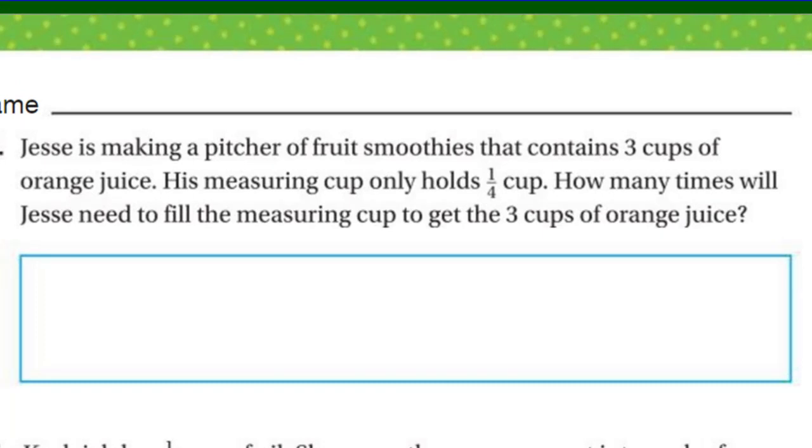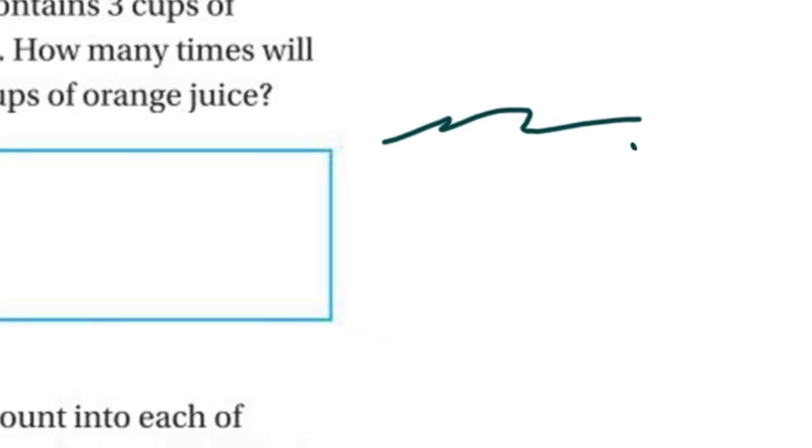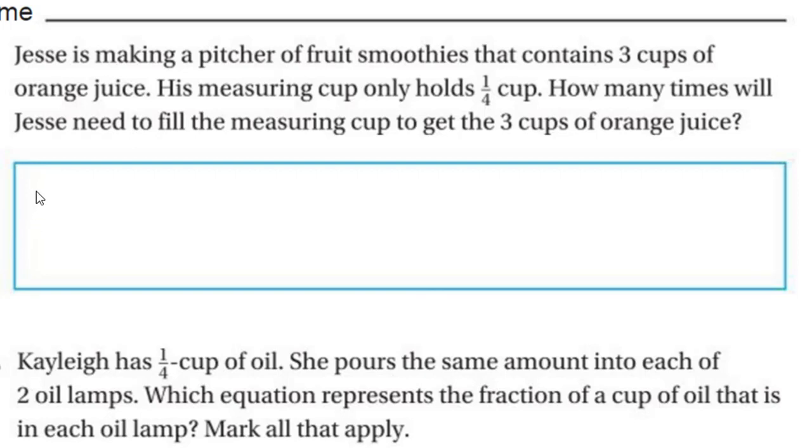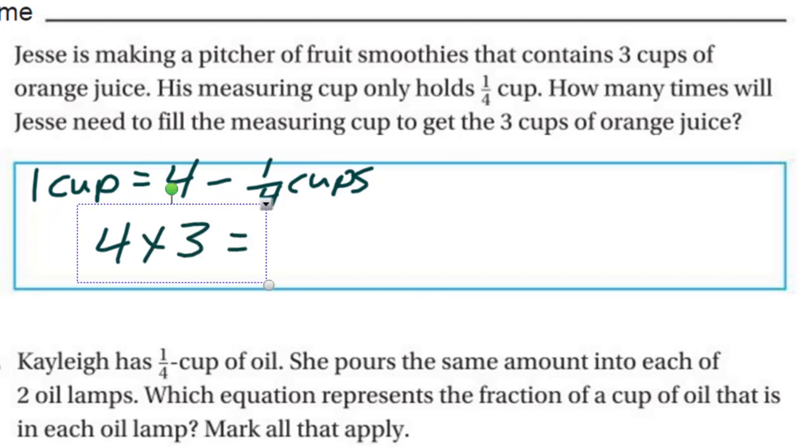Jesse is making a picture of fruit smoothies. It contains three cups of orange juice. His measuring cup only holds one quarter cup. How sad. How many times will Jesse need to fill the measuring cup to get the three cups of orange juice? I would say a very long time. He could be waiting for next Christmas. Well, how can we solve that? If we have three cups of orange juice, one cup is going to be equal to four one-quarter cups. So if one cup equals four one-quarter cups, then I should be able to take the four quarter cups I would need and multiply that by three. So four times three cups equals 12. In this case, 12 one-quarter cups, or 12 times, I believe, would be the lucky answer to this problem.